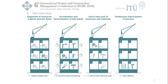Being one of these techniques, takt time planning is an effective means of managing customer demand and supply chain at the pace the work requires. TTP helps deliver the product or service at the rhythm that the customer desires. Moreover, LOB is another effective method to optimize repetitive works and manage time.